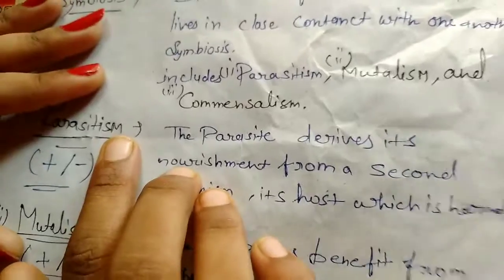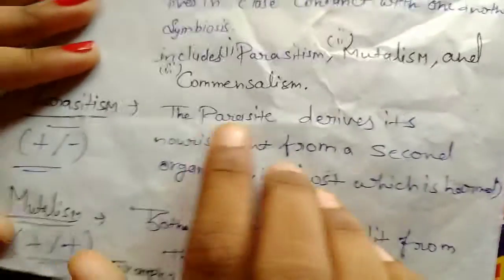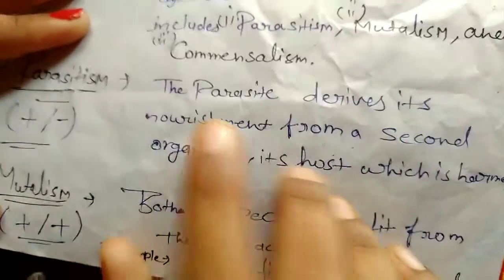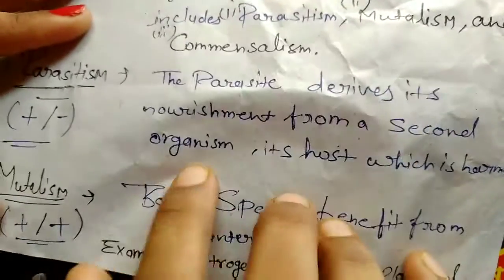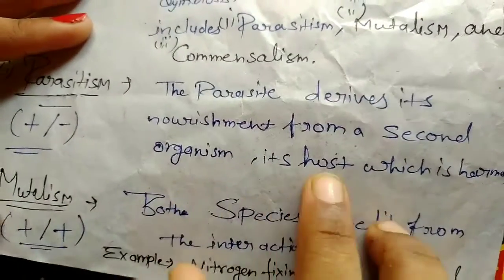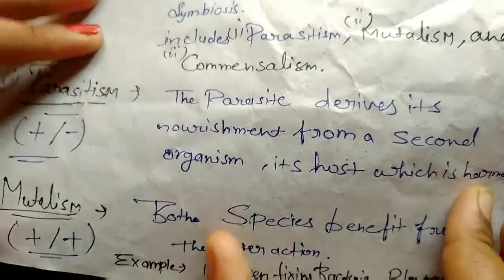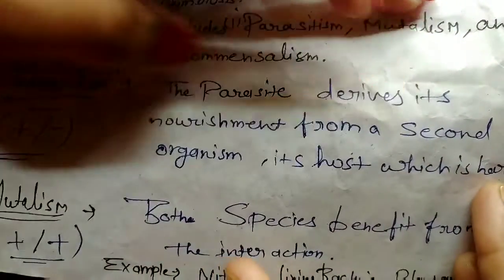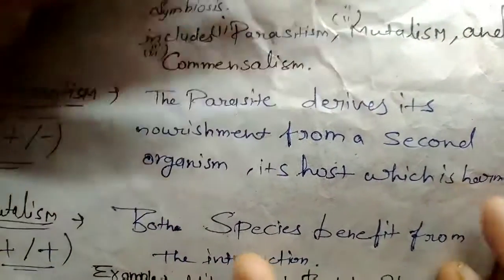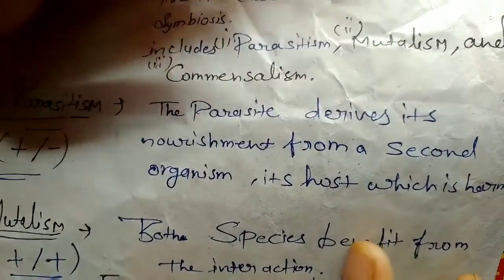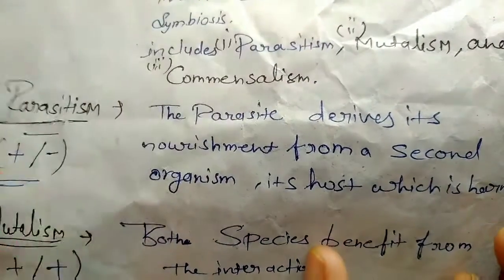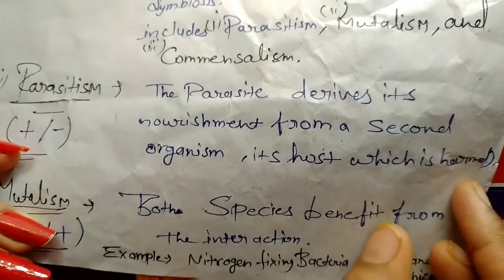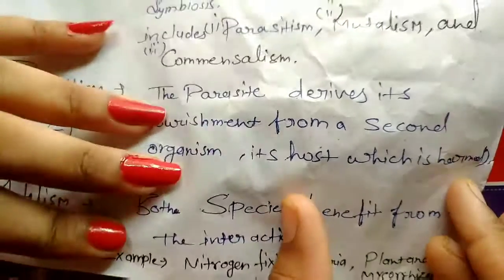The parasite derives its nourishment from a second organism — its host — which is harmed in the process. The host is harmed while the parasite benefits.